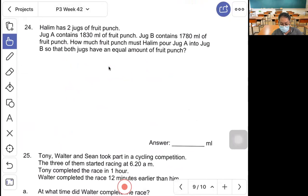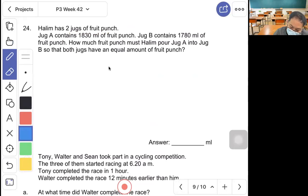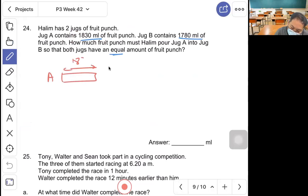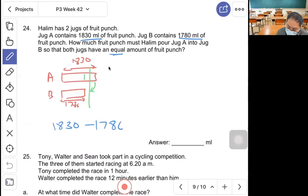Question 24, Halim has 2 jugs of fruit punch. Jug A contains 1,830 ml of fruit punch, Jug B contains 1,780 ml of fruit punch. How much fruit punch must Halim pour from Jug A into Jug B so that both jugs have an equal amount? Here is A: 1,030, B is 1,780. Take this extra part, cut into half, divide by 2 and give to B, then they'll be equal. 1,030 minus 1,780 equals 50, then cut into half. Answer is 25 milliliters.